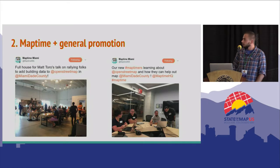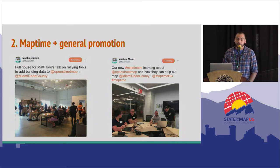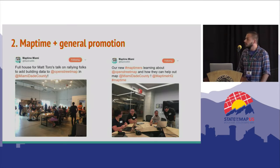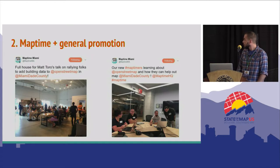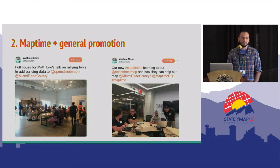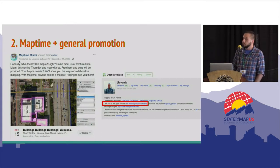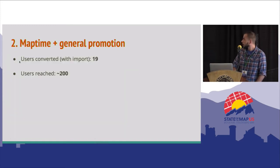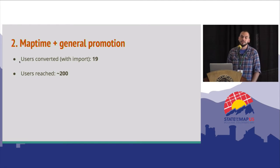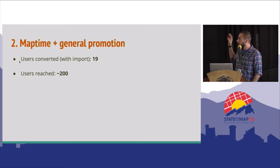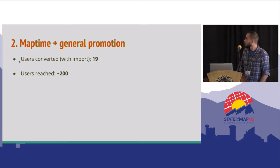The second approach is the general MapTime activities we have been doing. We held meetups pretty much every month at the time of the import. Some of them were really well attended, some not so much. We tried our best to reach out to people and engage them in mapping. With this method, we gained 19 mappers — 19 mappers who actually sat down in front of our tasking manager, took the time to read the instructions, downloaded our dataset, and uploaded data back to OpenStreetMap, which is way better than the previous method.